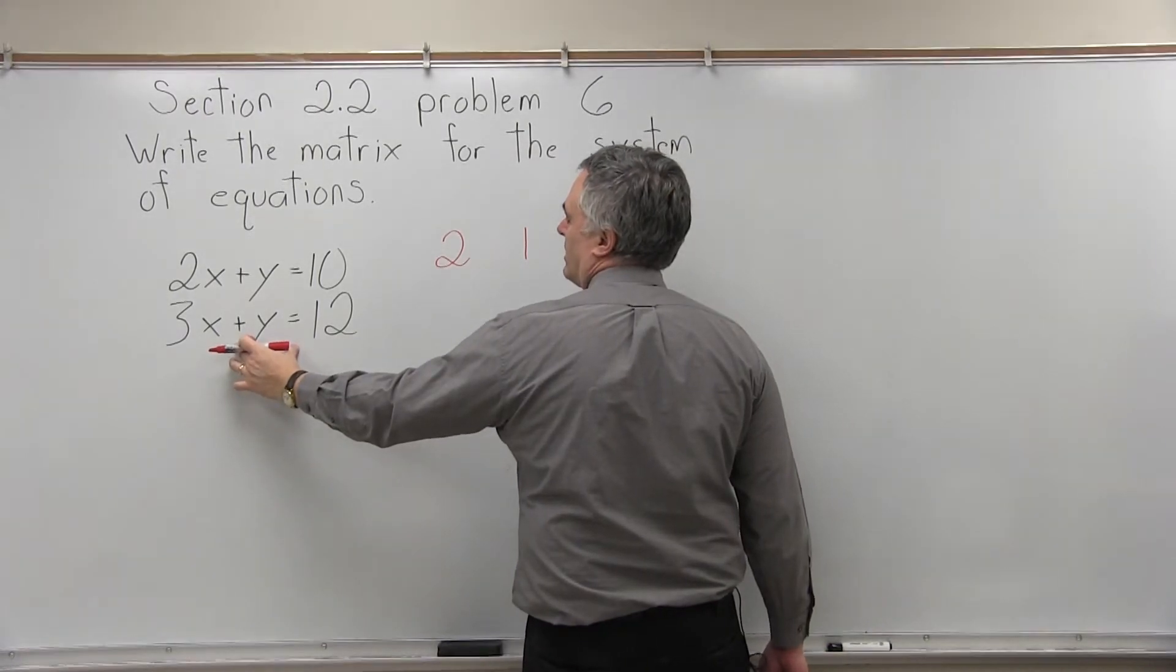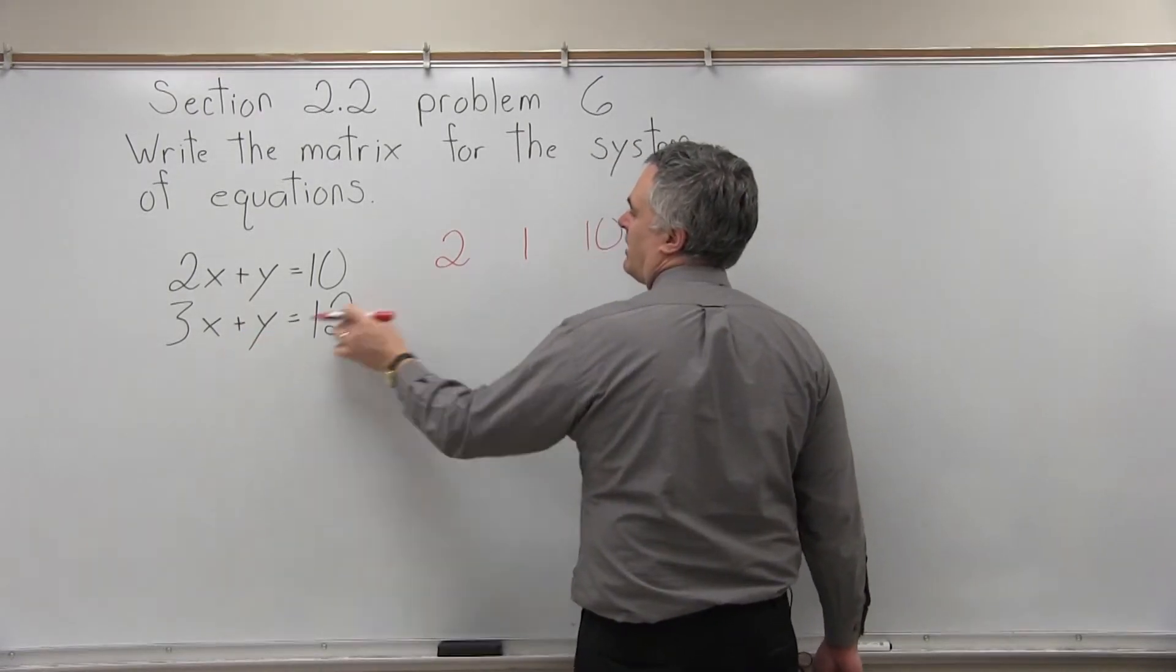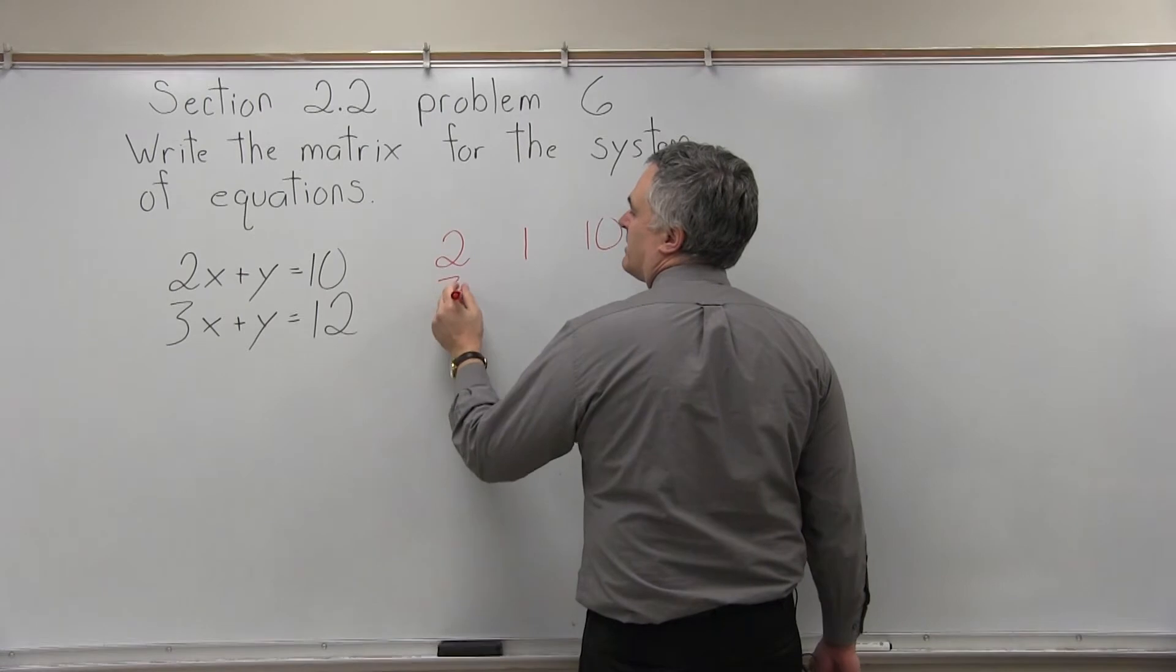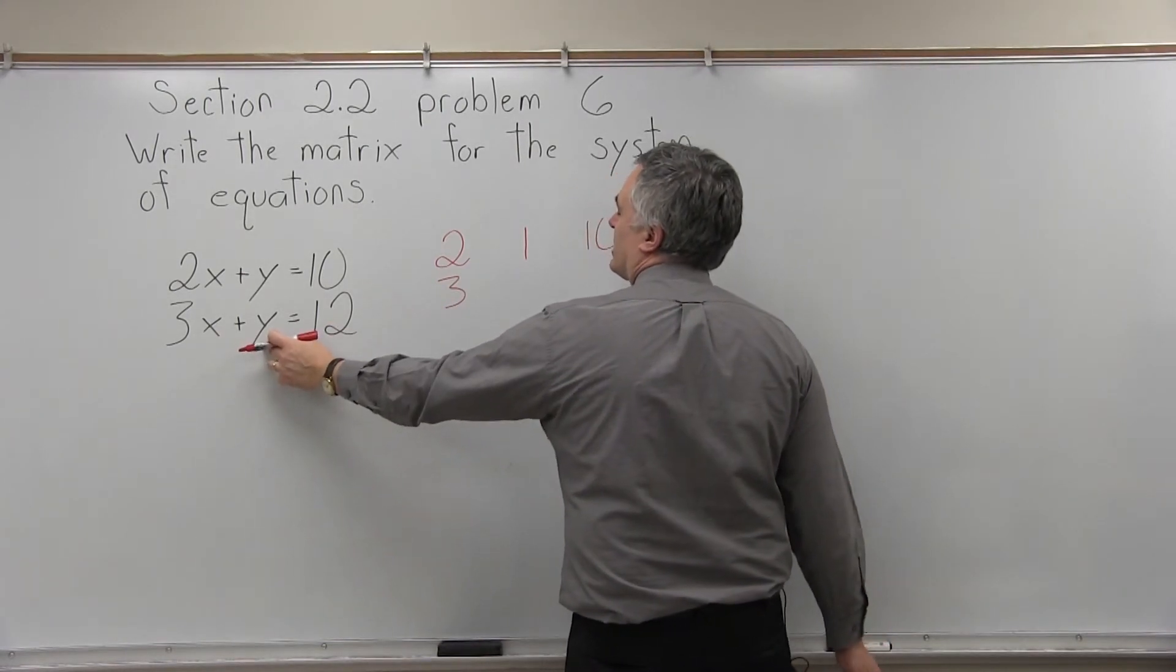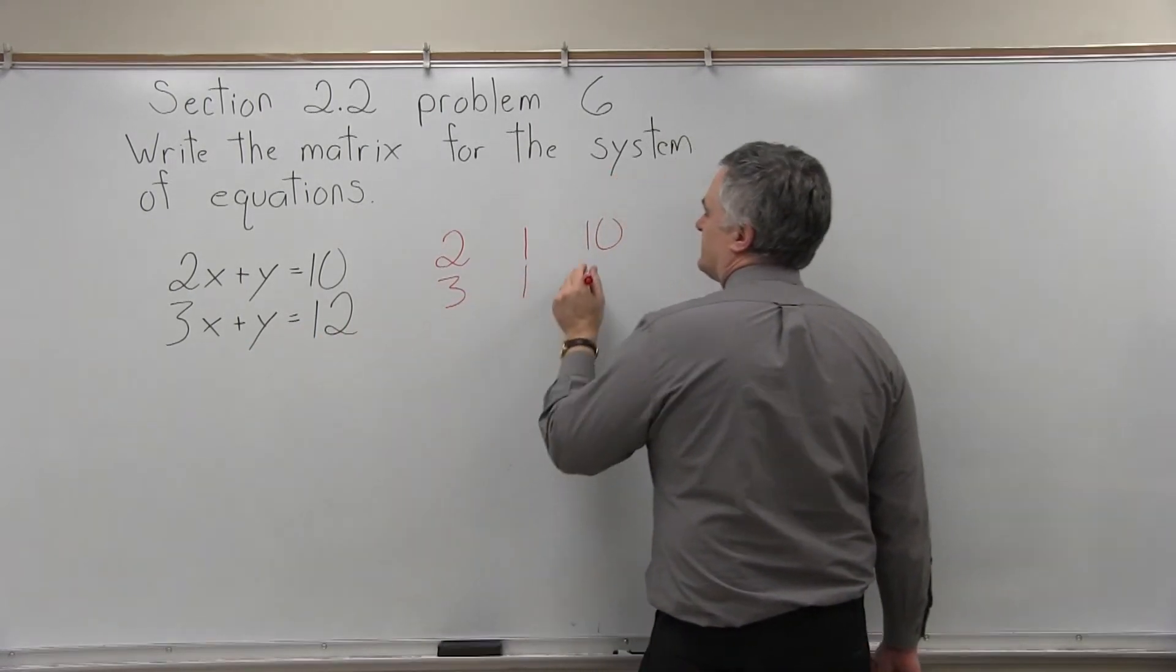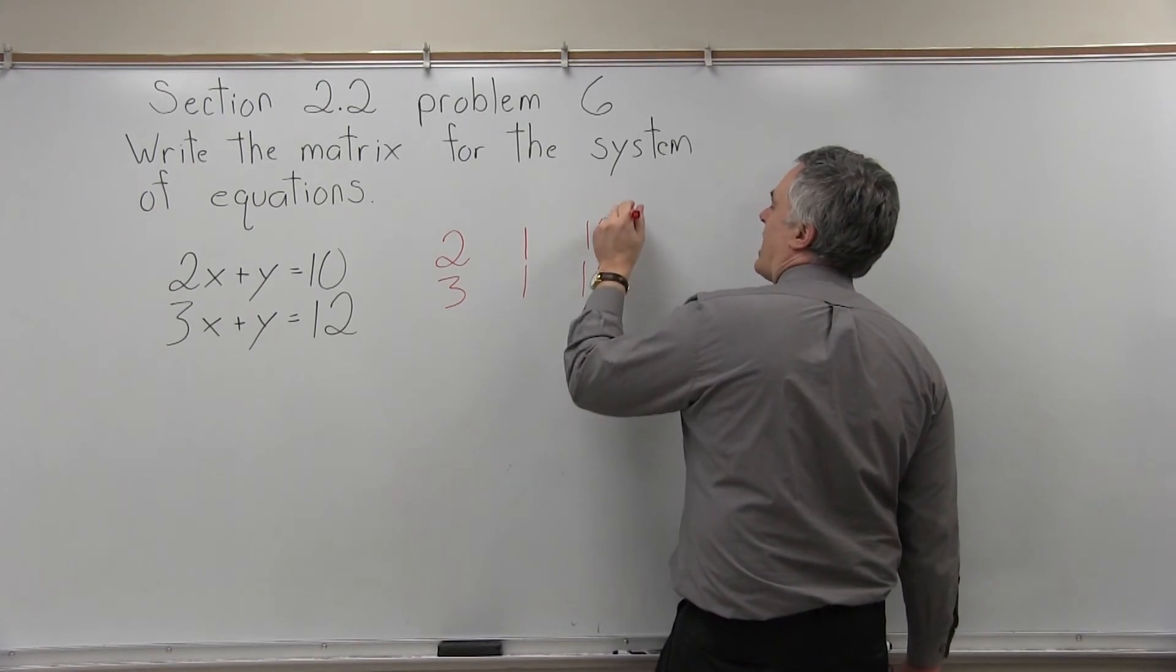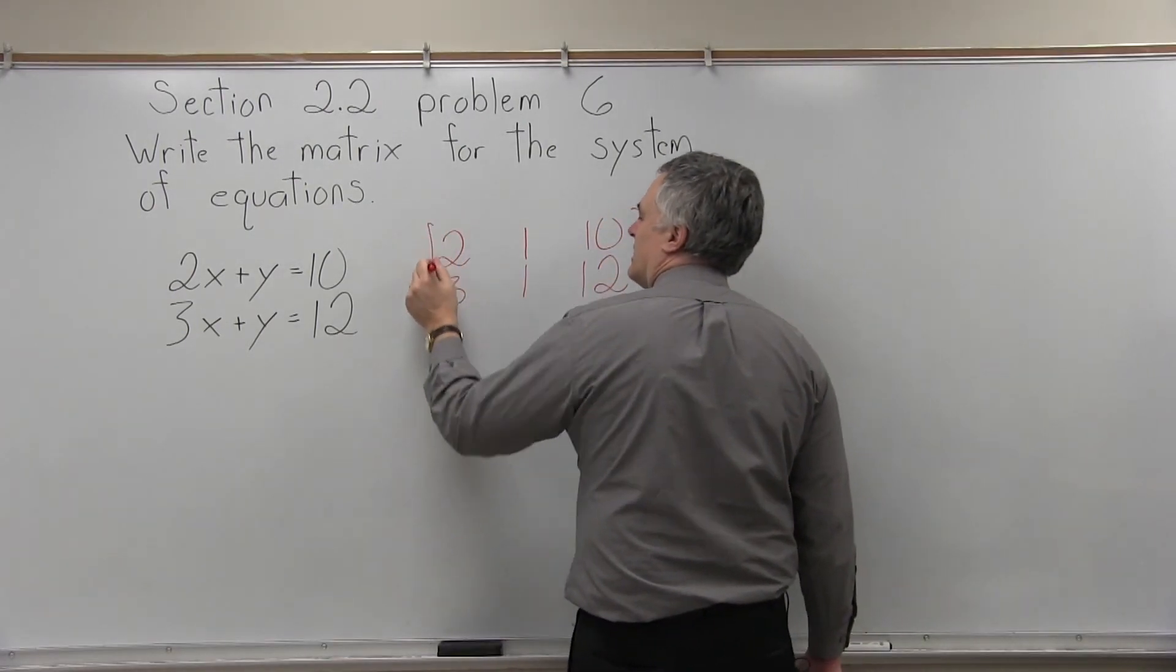And then the bottom equation, 3x plus y equals 12. The 3x will give me a 3 in my matrix, the y is really a 1y so it gives me a 1, and then the 12 stays as a 12. And you put brackets on it because it's a matrix, and now it's done.